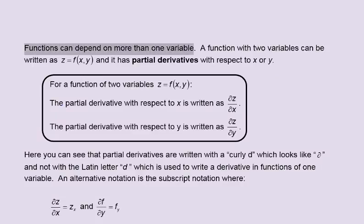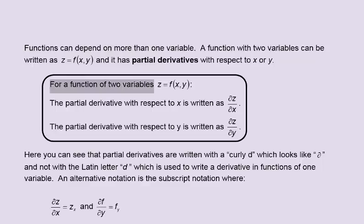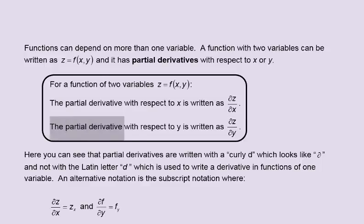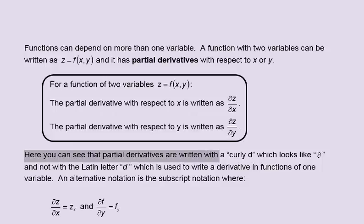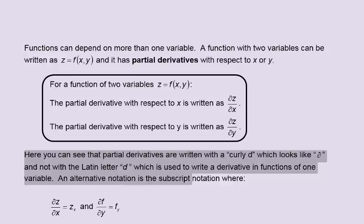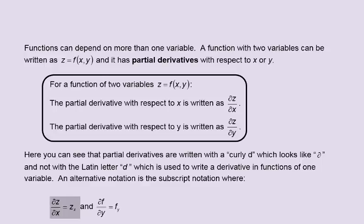Functions can depend on more than one variable. A function with two variables can be written as z equals f(x, y) and has partial derivatives with respect to x or y. The partial derivative with respect to x is written as partial z with respect to partial x, and the partial derivative with respect to y is written as partial z with respect to partial y. Partial derivatives are written with a curly d, not the Latin letter d used for ordinary derivatives. An alternative is subscript notation: z subscript x and f subscript y.